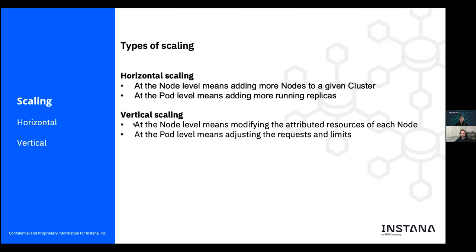In the case of vertical scaling, at the node level it means modifying the available resources of each node — for example, if you have a virtual machine running on a physical server and you modify the resources available in that VM, you are vertically scaling that node. For a pod, it means adjusting requests and limits. When you fine-tune requests and limits taking into account the actual consumption of your application, you are actually vertically scaling your containers or pods.